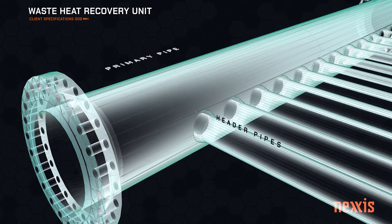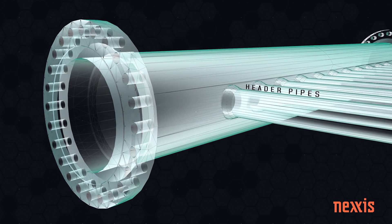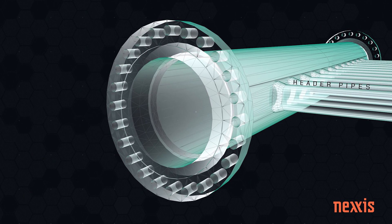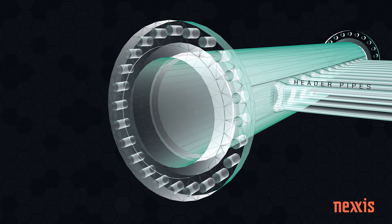An oil and gas client approached us. They wanted to inspect a waste heat recovery unit. The difficulty being that they've got a whole array of headers which are perpendicular to a larger pipe. The difficulty with inspecting this is that you just can't get a camera around the corner.